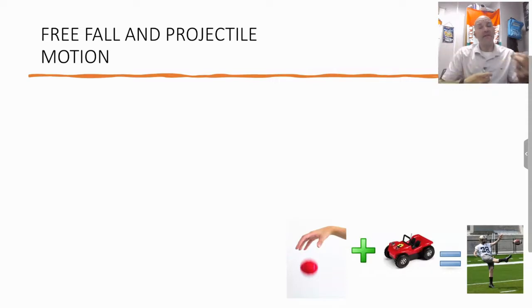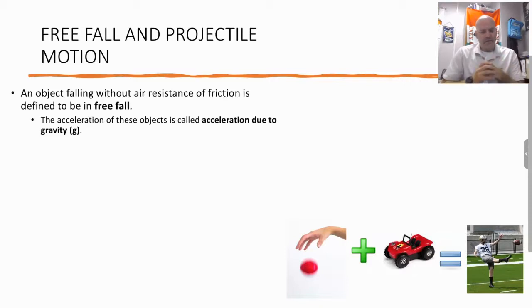The reason why we combine these is because part of projectile motion is just simply free fall. Free fall, an object falling without air resistance or friction, is defined to be in free fall. What does that mean? That means the only thing acting upon it is the acceleration due to gravity g, which you can remember has a value of 9.81 meters per second squared.